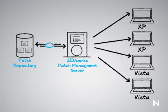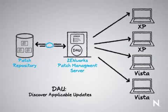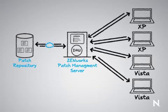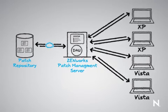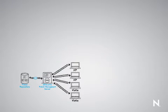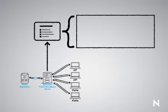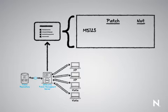We call that bundle a DAU, or Discover Applicable Updates. Basically what this does is on each machine, they look at that series of signatures and report back whether they have a given patch or not. Each machine then sends the results back to the Zenworks server, which puts that information into the database.